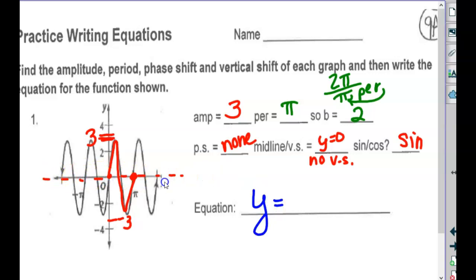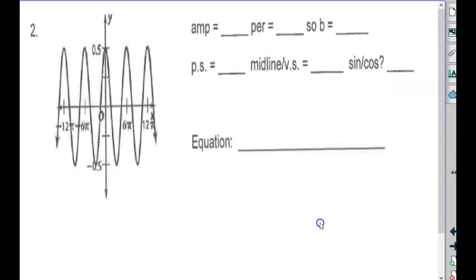Two pi over pi is just two. We're going to need to put a two into our equation. Can anybody write the equation yet? Three sine two x. Is there any phase shift, vertical shift, anything else? No.